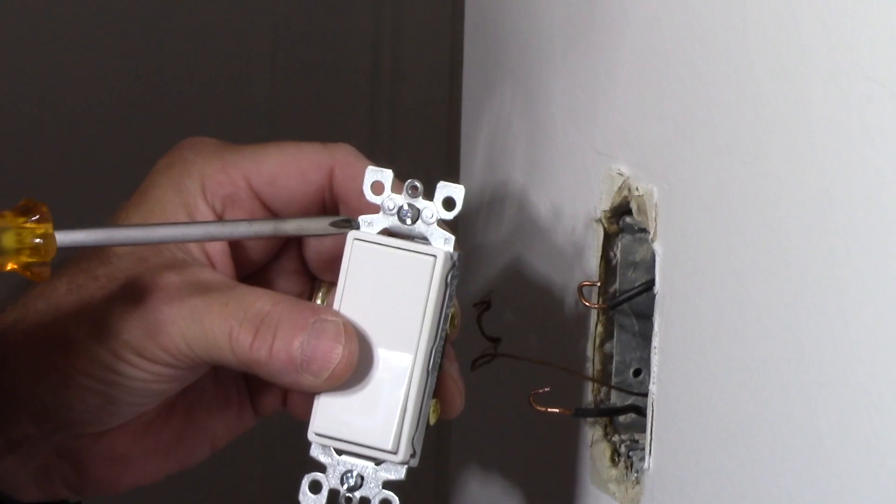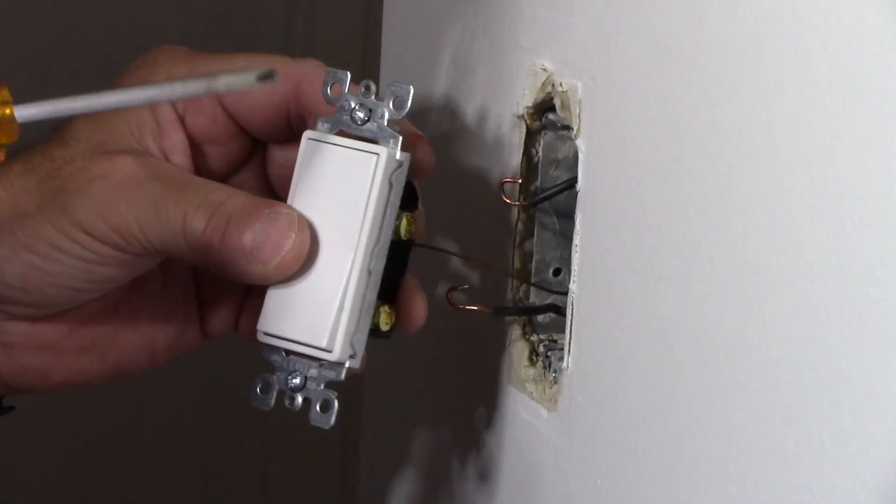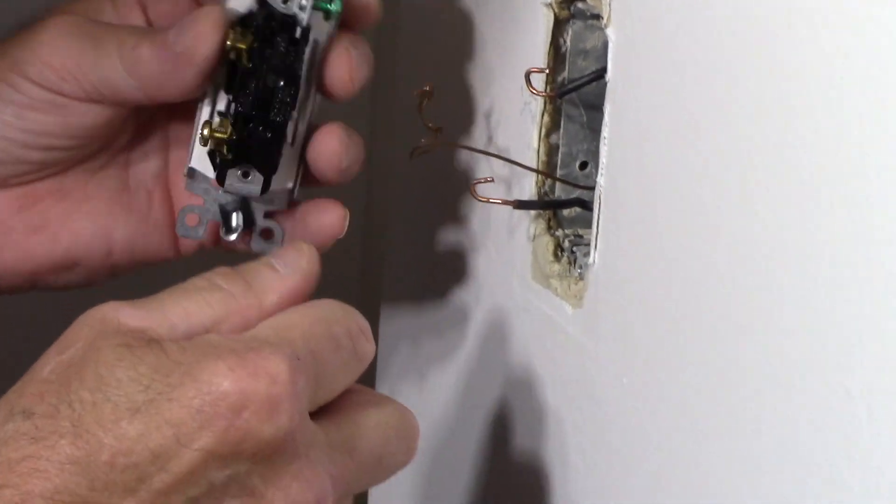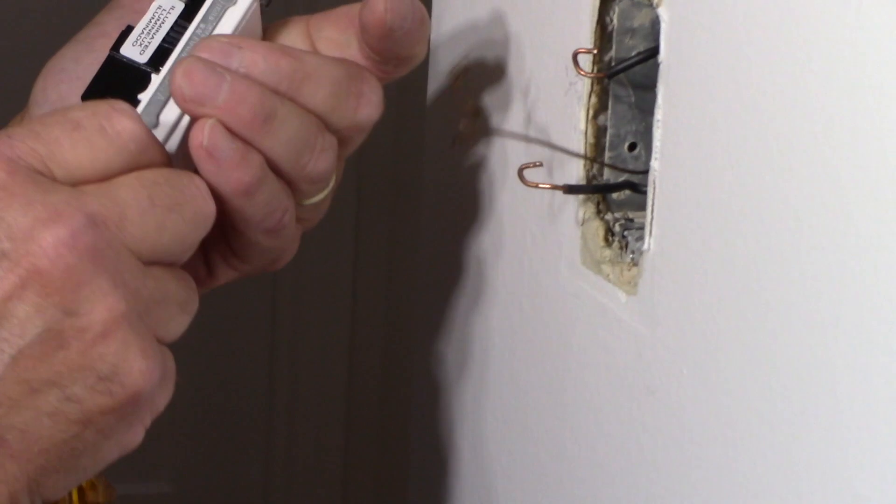On the switch itself, it usually will say top on the switch itself. So the next thing we're going to do now is we're going to take this. We're going to take our ground wire. We're going to reconnect our ground wire first.